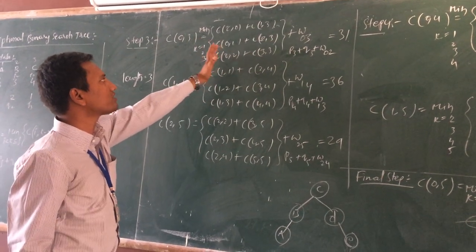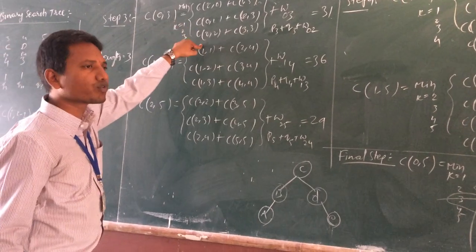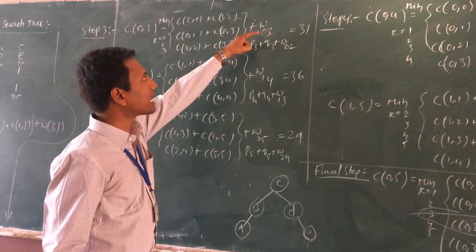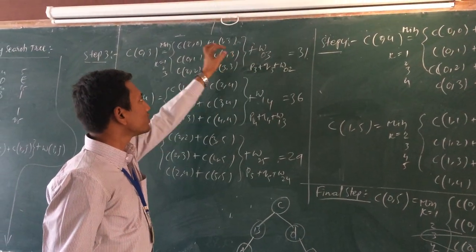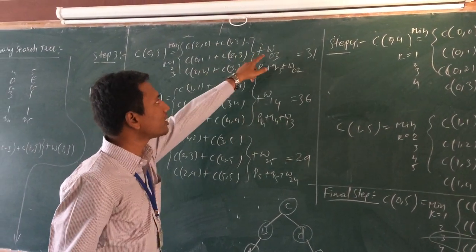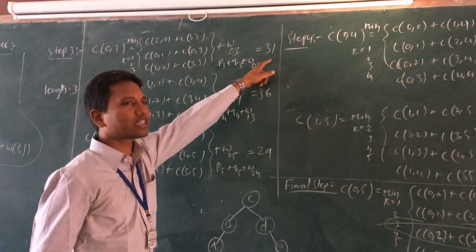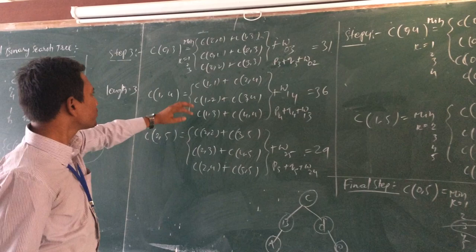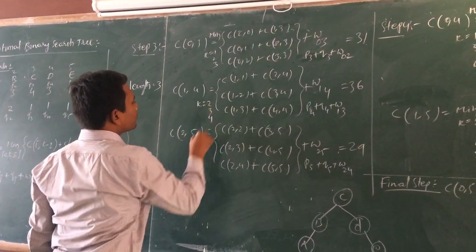We can calculate the value between the node values and the difference is 0.3. When it is equal to 0.3 for 3 nodes, the minimum value equals 0.3. So k values are possible in 2, 3, 4.